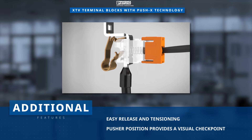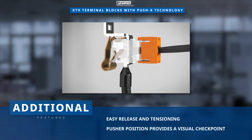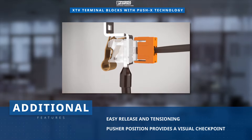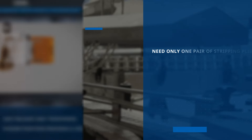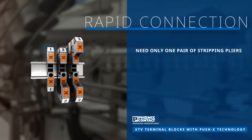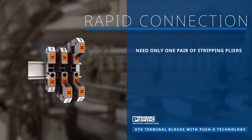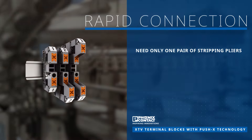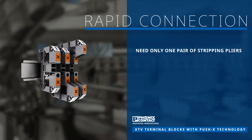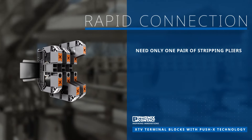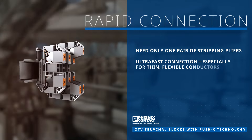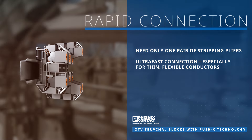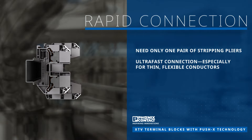The pusher position provides a visual checkpoint that indicates whether the clamping chamber is released or clamped. The XTV terminal blocks reduce installation times with the need for just one pair of stripping pliers, making it one of the fastest connection technologies for thin, flexible conductors.